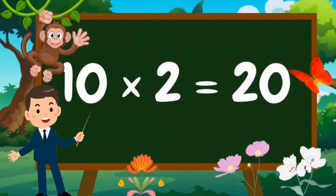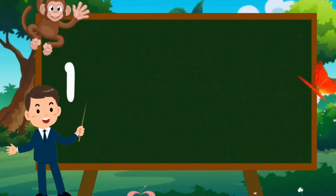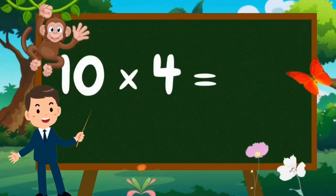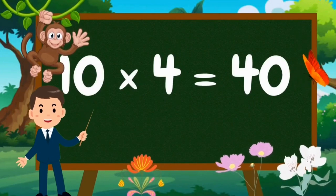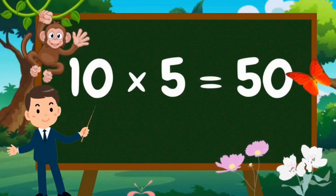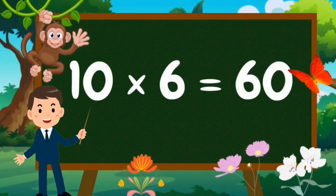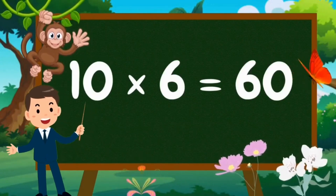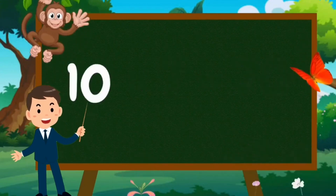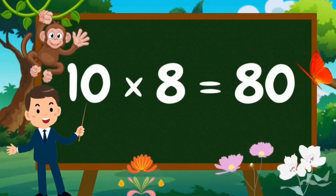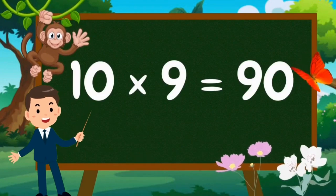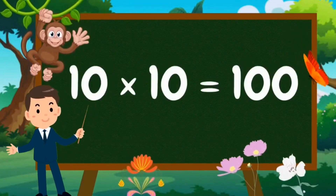Table of Ten. Ten ones are ten. Ten twos are twenty. Ten threes are thirty. Ten fours are forty. Ten fives are fifty. Ten sixes are sixty. Ten sevens are seventy. Ten eights are eighty. Ten nines are ninety. Ten tens are one hundred.